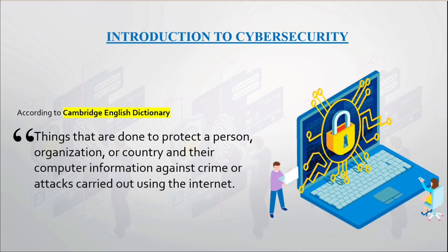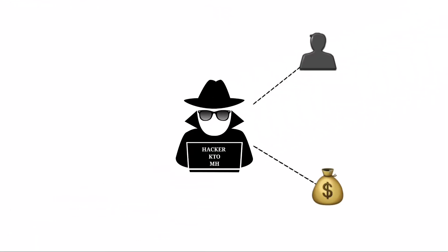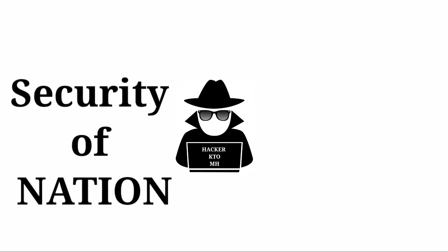What is cyber security? According to the Cambridge English Dictionary, cyber security refers to things that are done to protect a person, organization, or country and their computer information against crime or attacks carried out using the internet. Today, cyber crime causes huge problems for society — personally, financially, and even in matters of national security.